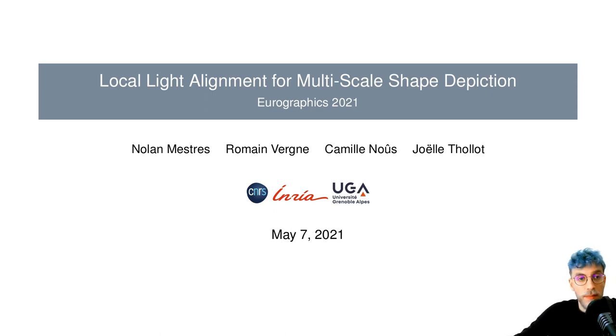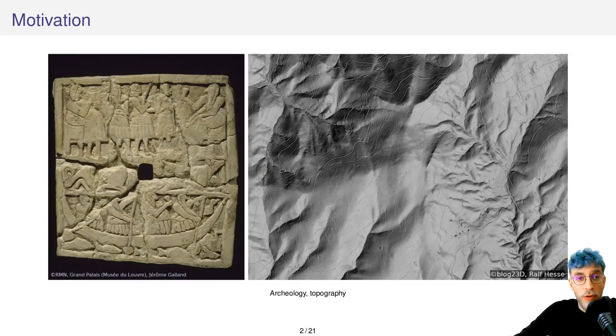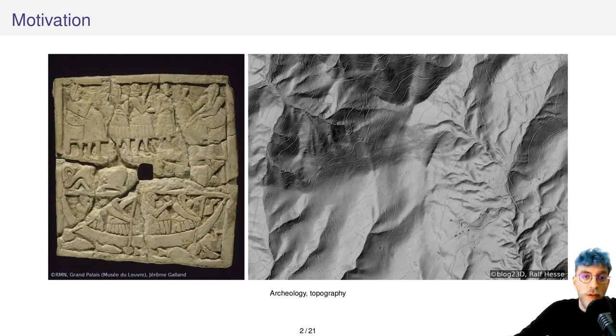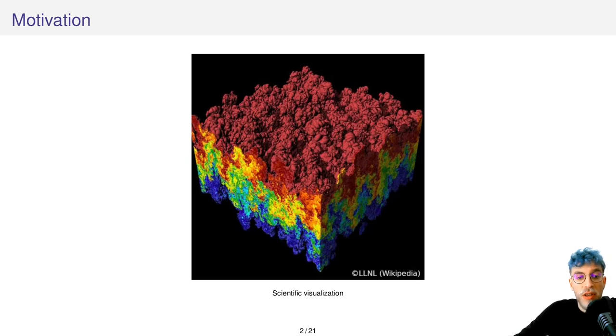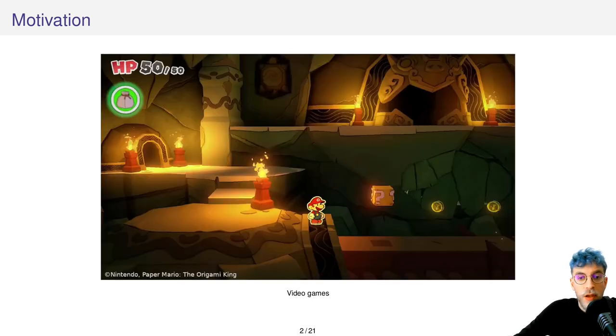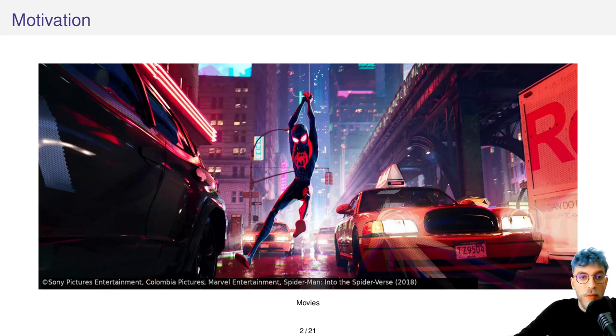So let's begin. Understanding the shape of objects is actually crucial in many domains ranging from archaeology to topography, but also including scientific visualization—you could think of medical imaging in particular—and the fields of entertainment such as the video game and movie industries.